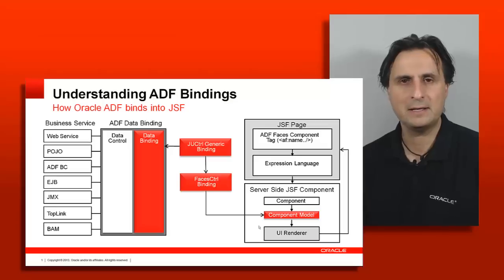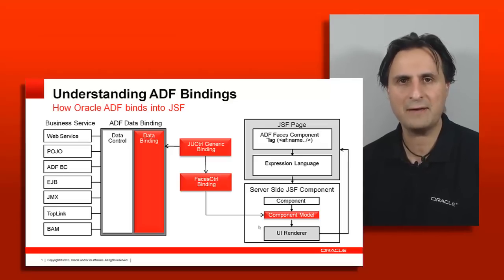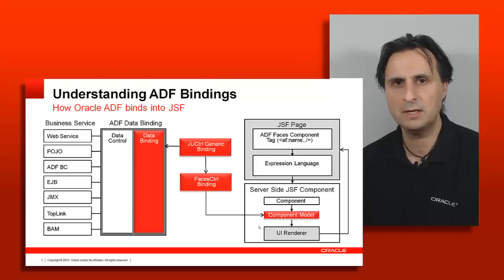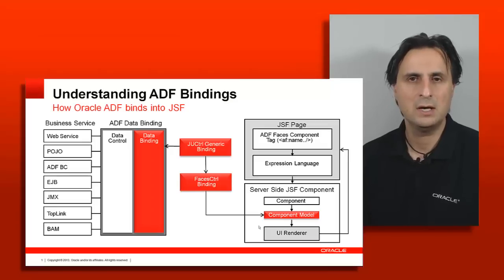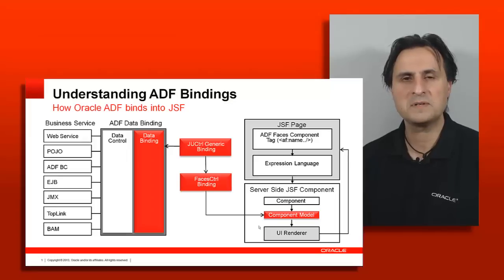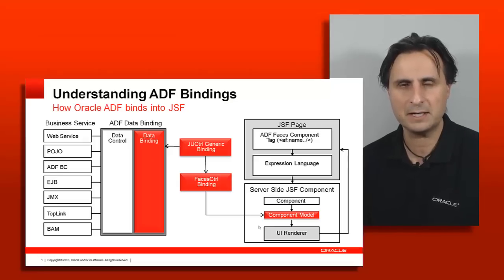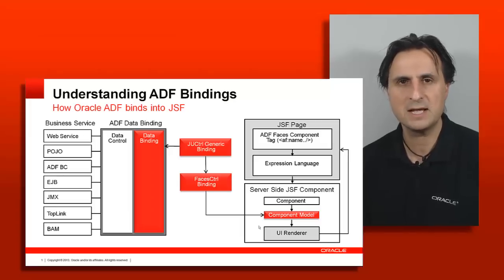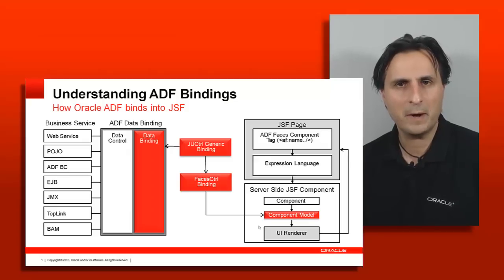At runtime however the binding is not metadata — it's a Java framework, so we have to use Java objects at runtime. There are two types of objects that we are dealing with. One set starts with JU, which represents all of the generic public binding classes, whereas FACES control bindings are very sophisticated binding classes for the JavaServer Faces framework. Typically when you develop an application you should use the JU binding classes.